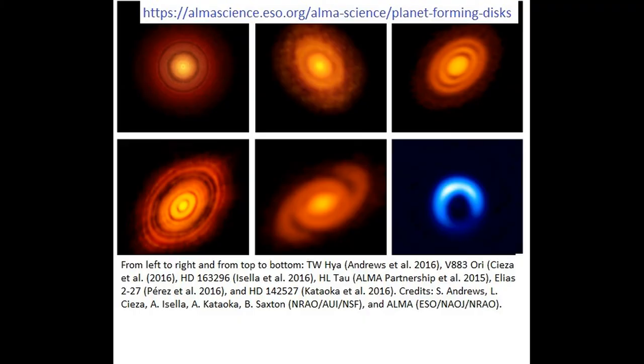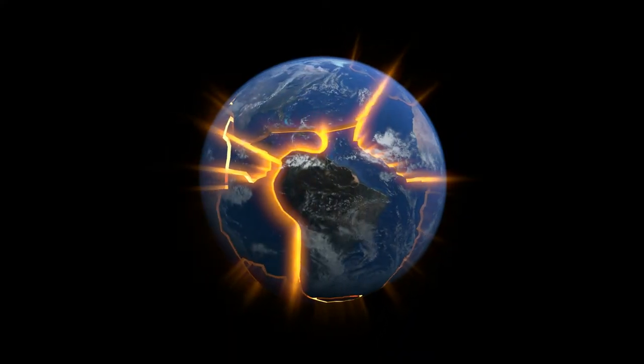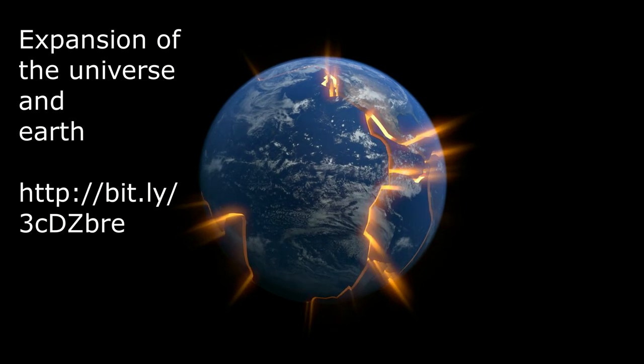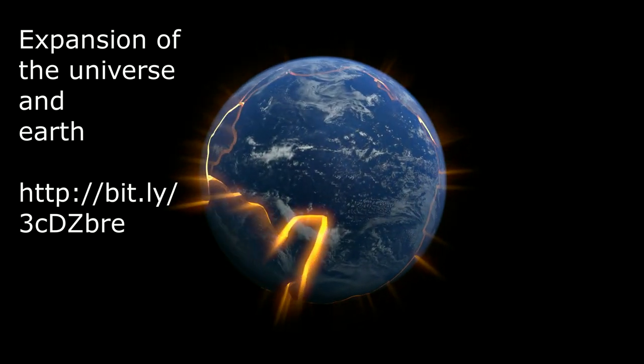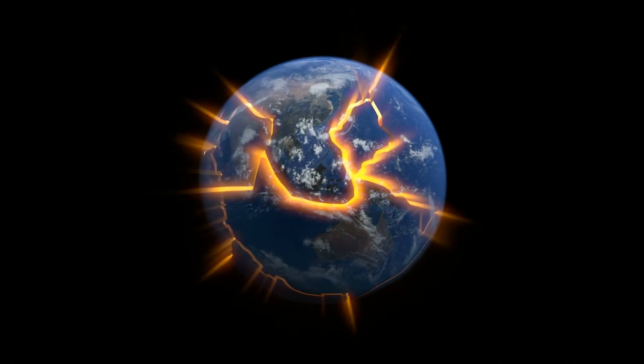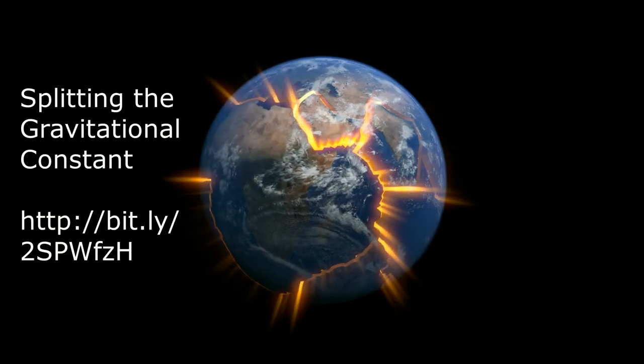This image of a protoplanetary star system really looks very much like an atom. This is the first image ever of a hydrogen atom. I made a video about the expansion of the universe and Earth. The expansion is just a small part of the acceleration at the surface of our Earth. The other part is the inflow of energy to the center of mass. These two parts, inflow and expansion, produce the gravitational constant. I made a video about it too, splitting the gravitational constant.